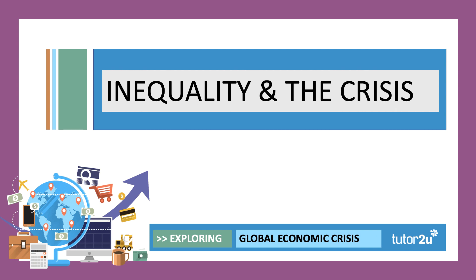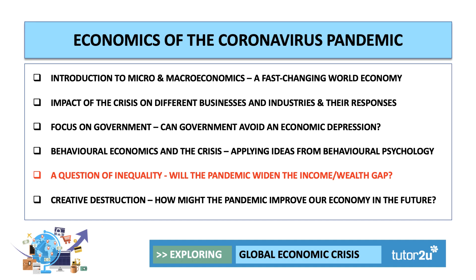Welcome to the fifth in our series of six lessons designed for Year 11 students thinking of transitioning to A-level economics. We've taken six aspects of the coronavirus pandemic and the economic crisis surrounding it, linking them to key economic ideas. We've explored micro, macro, the impact on different industries and businesses, how government and the Bank of England are trying to prevent a depression, and in the fourth lesson we looked at behavioural economics.